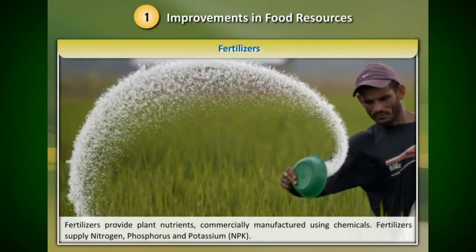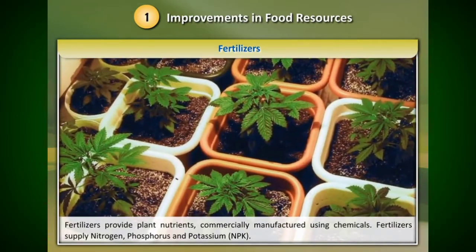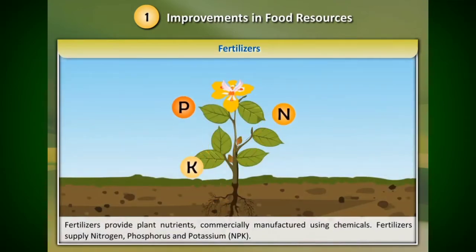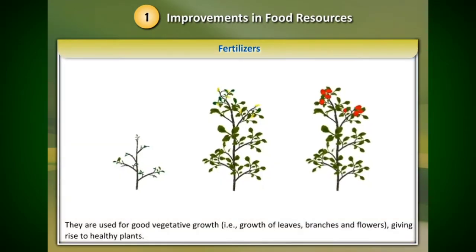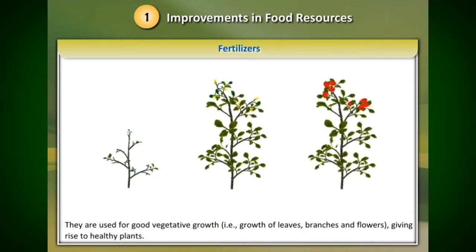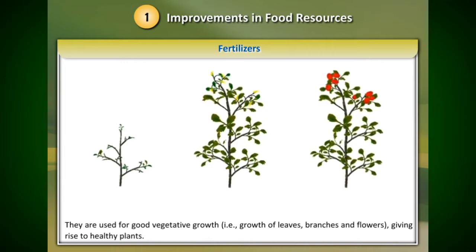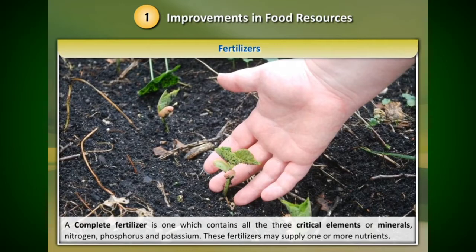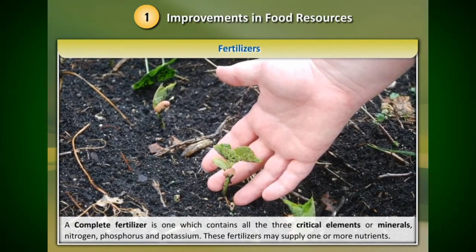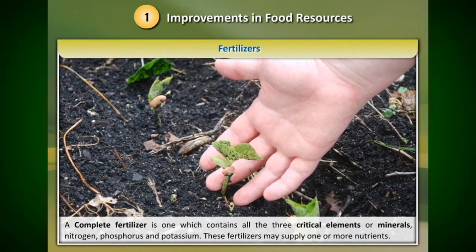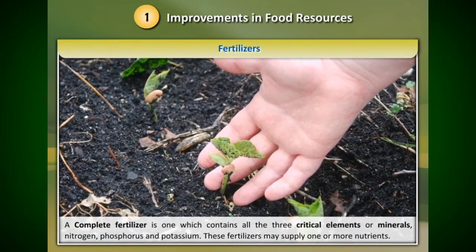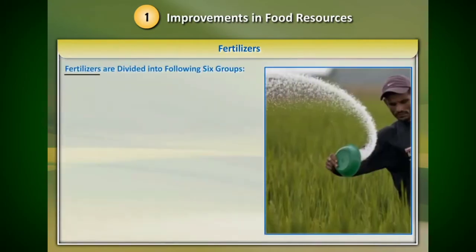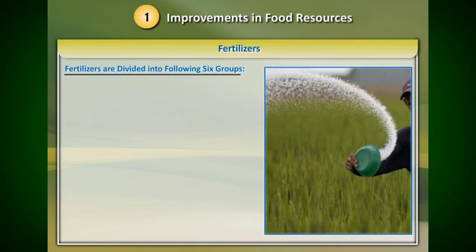Fertilizers provide plant nutrients, commercially manufactured using chemicals. Fertilizers supply nitrogen, phosphorus, and potassium — NPK. They are used for good vegetative growth, that is growth of leaves, branches, and flowers, giving rise to healthy plants. A complete fertilizer is one which contains all three critical elements — nitrogen, phosphorus, and potassium. On the basis of availability of nutrients, fertilizers are divided into six groups.